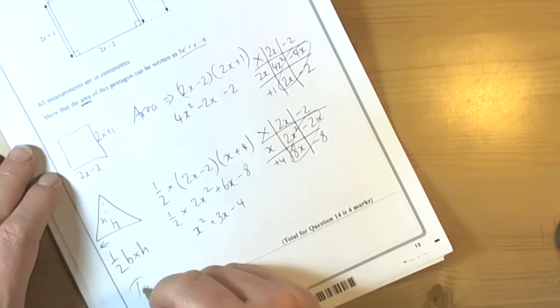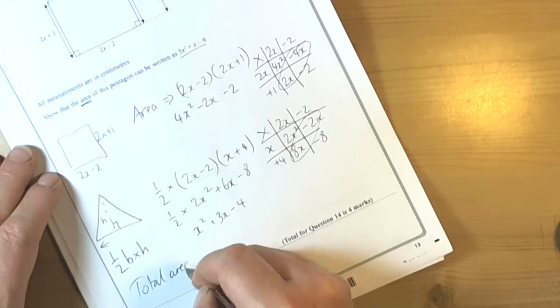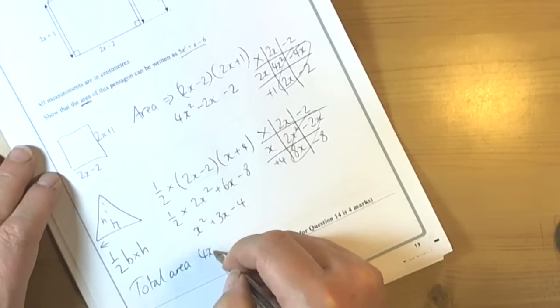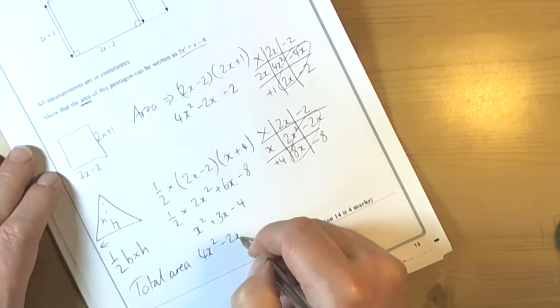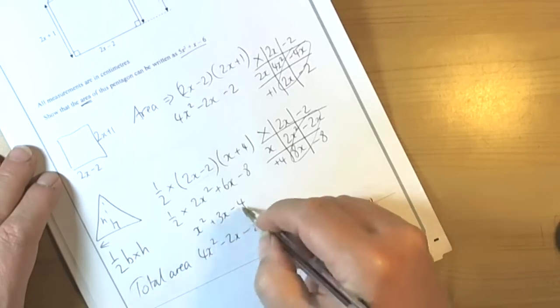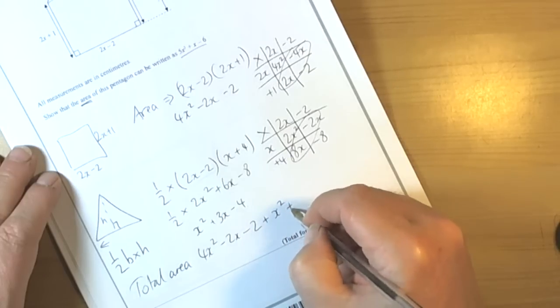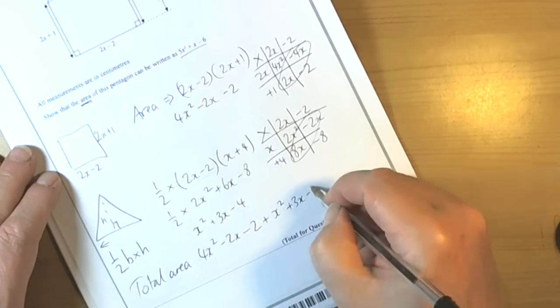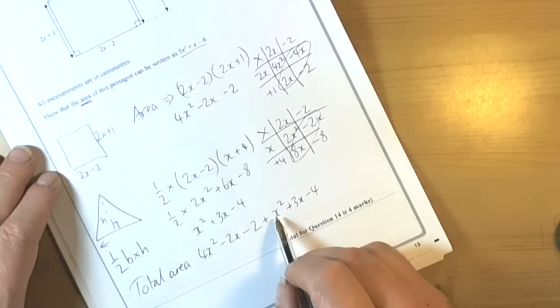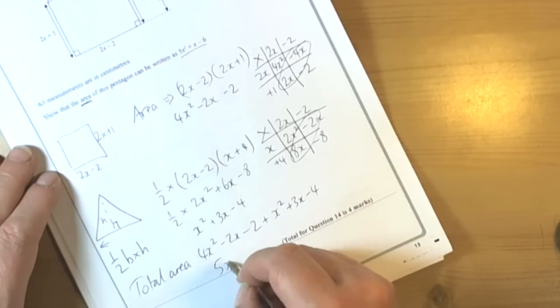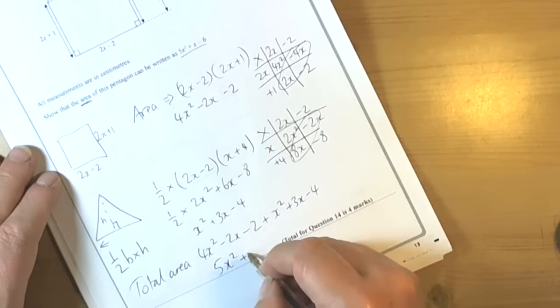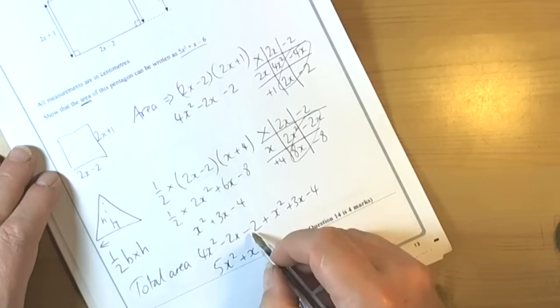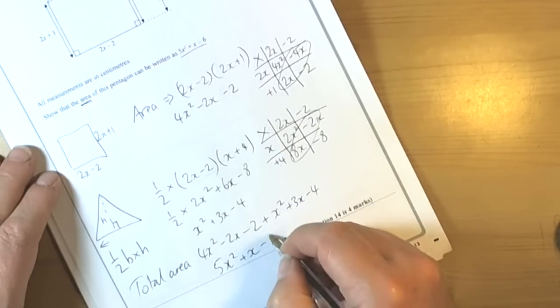The total area then, total area is 4x squared take away 2x take away 2 plus the triangle area which was x squared plus 3x take away 4. So we've got 4x squared, bring the like terms together, plus x squared is 5x squared. We've got negative 2x plus 3x which makes plus x. And then we've got negative 2, take away 4 more is minus 6.